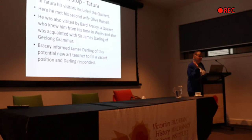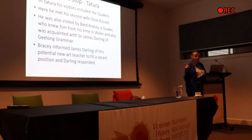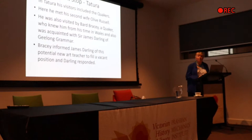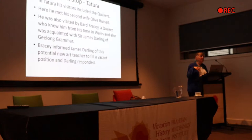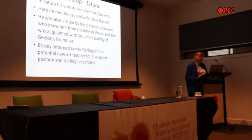Then he got transferred to Tatura. His visitors included the Quakers, because his daughter had also worked for the Quakers and was in contact with him. That's where he met Olive Russell, who became his second wife. He was also visited by Bertha Bracey, who he had had contact with through the Quaker subsistence program in Wales. He knew James Darling, and Darling had lost a few teachers because of the war. So Darling responded and hired him as the art teacher.